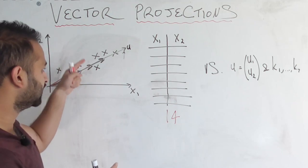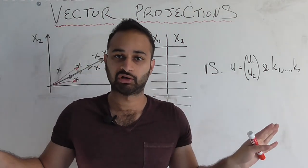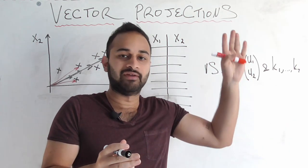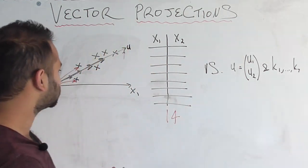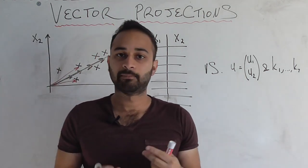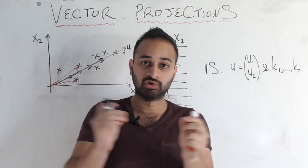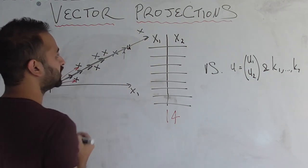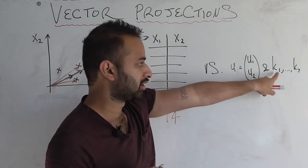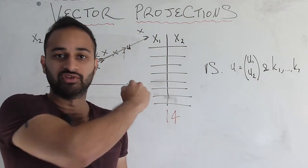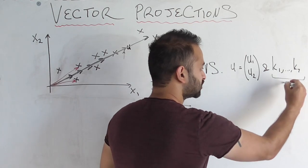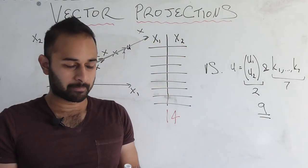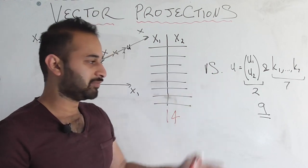After projecting each of the seven data points onto the unit vector, we already know the direction — it's the direction of the unit vector, because that's how projections work. The only thing we need to track is the magnitude of each projection, which we'll call k1 through k7. So there are seven magnitudes plus two components in u, making a grand total of nine different pieces of information to store.